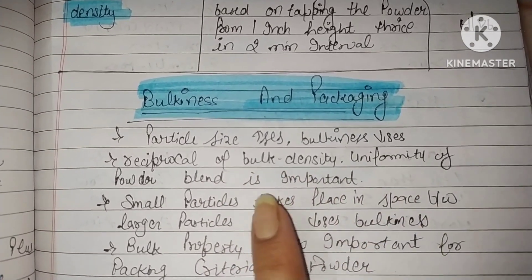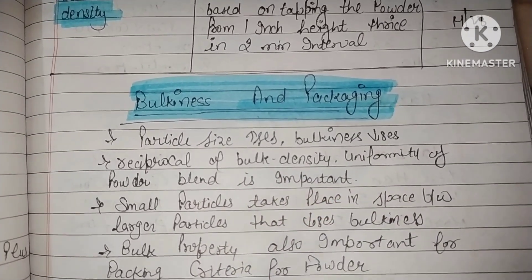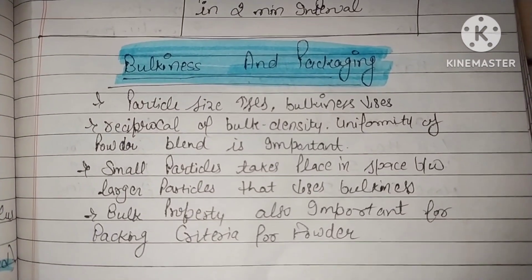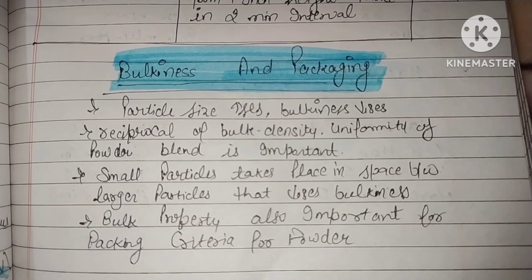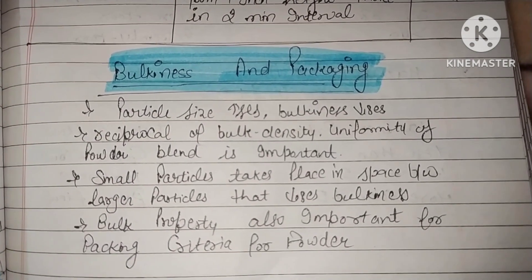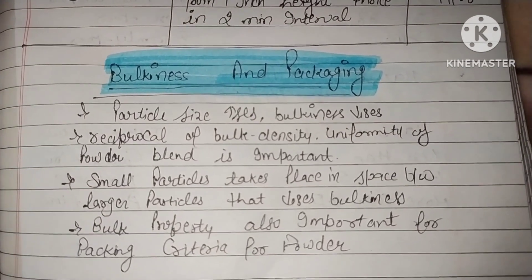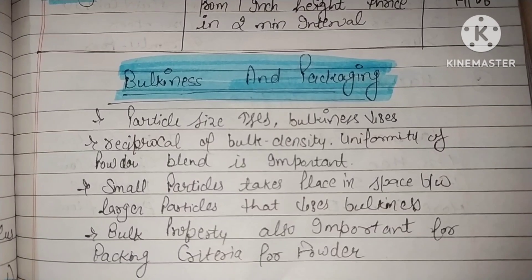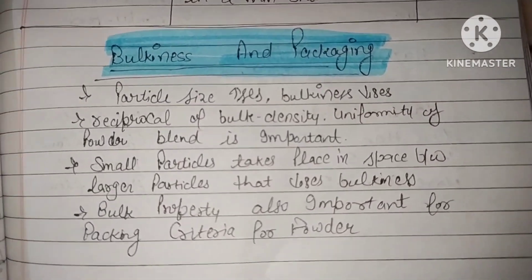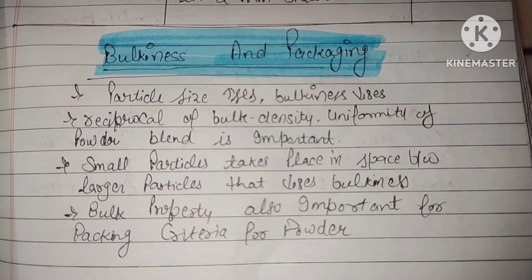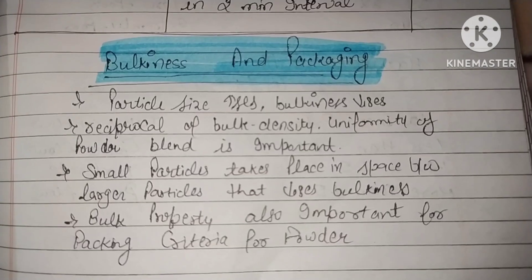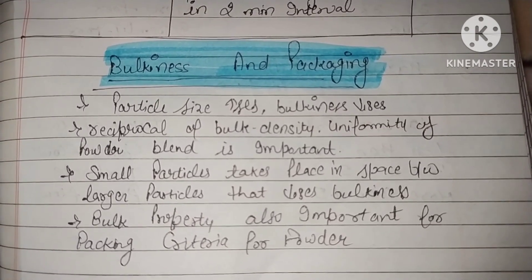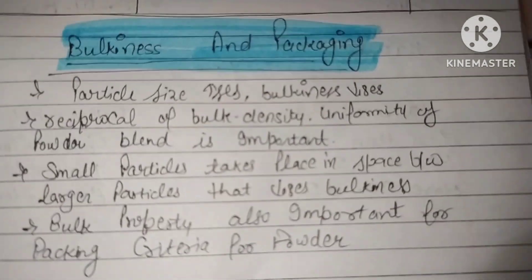Bulkiness is the reciprocal of bulk density. Uniformity of the powder blend is important. Small particles take place in the space between larger particles, which decreases bulkiness. If small particles are added among large particles, that also decreases bulkiness. Bulk properties are also important for the packing criteria of powder.